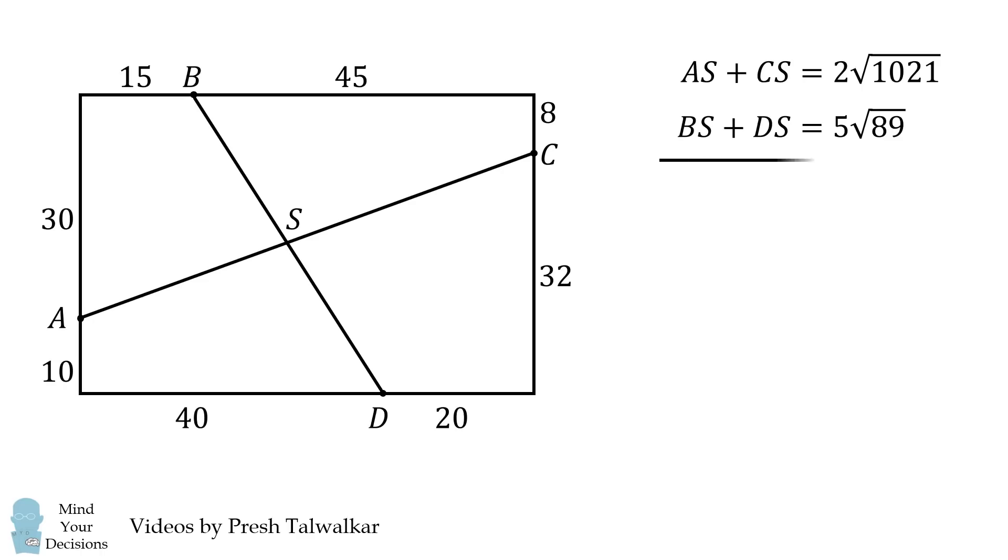We then can calculate the sum of the four distances, and that will be equal to 2√1021 + 5√89, and that's approximately 111.08.